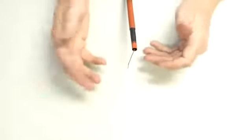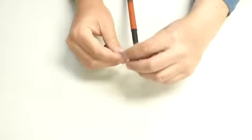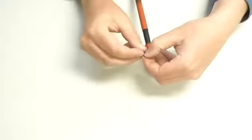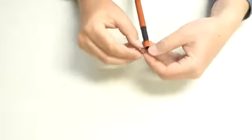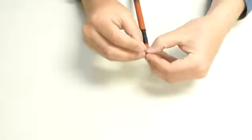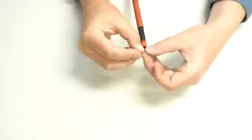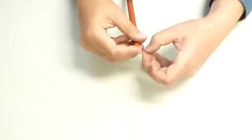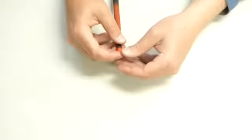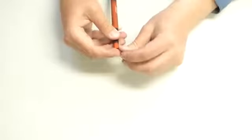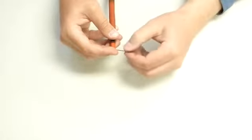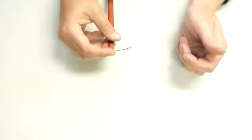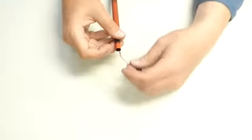Now to tie the stopper knot, all it is is a basic overhand knot. Some people do a figure eight, you can do whatever knot, it just has to be a knot. You can see that's the overhand knot and I just move it near the end of that lilian and then tighten it down. You can have a little bit of string coming off the end. That's the stopper knot.